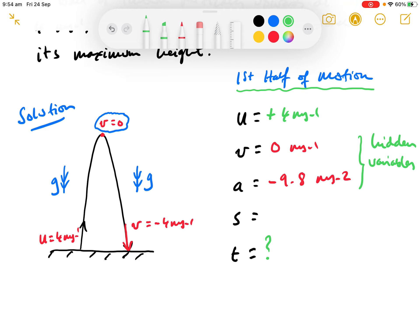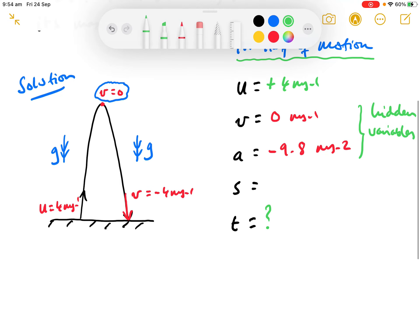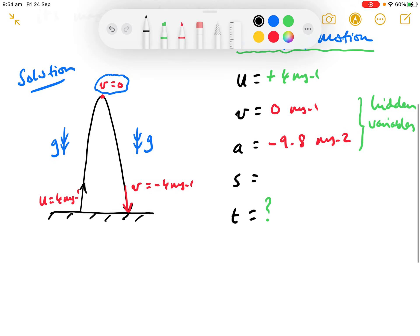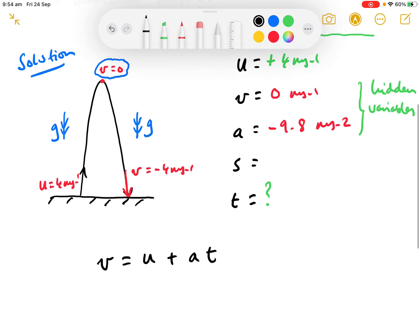And the time of flight is the unknown. So, if we can find an equation relating u, v, a, and t, then we can solve this one. We won't need s. Right. So, having looked at your variable list, you hopefully know that there is an equation connecting u, v, a, and t. And it is simply v equals u plus at.